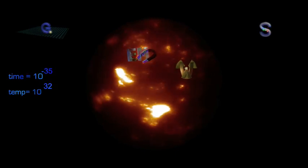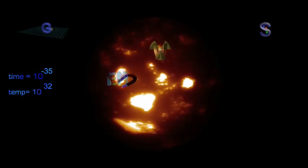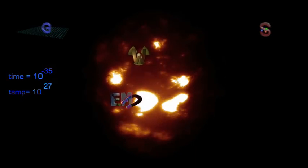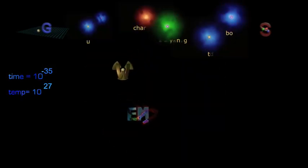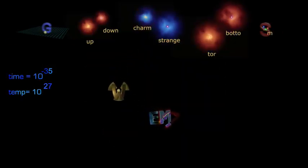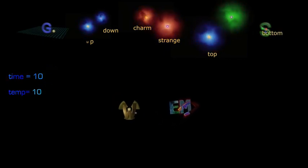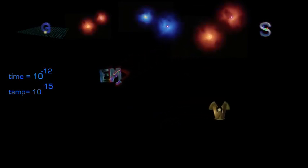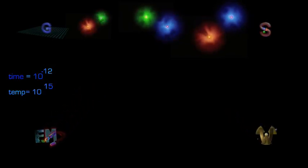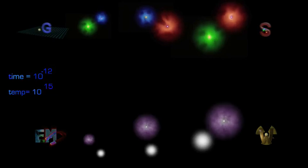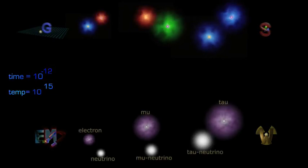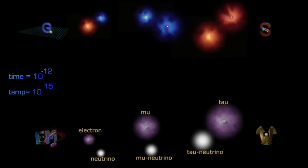This expansion and subsequent cooling down to 10 to 27 degrees allows six different types of quarks to form. At 10 to minus 12 seconds and 10 to 15 degrees, the weak force and electromagnetism separate, and we have the four independent forces we know today. At this point, all six types of leptons have formed, including the electron.